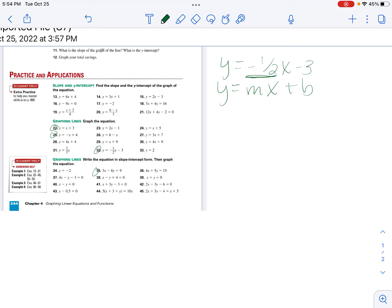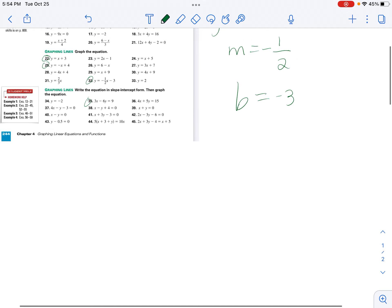My m is -1/2. My b is -3. Then I'm going to draw the graph.